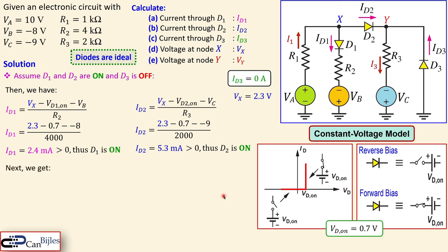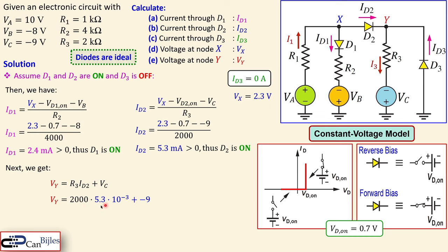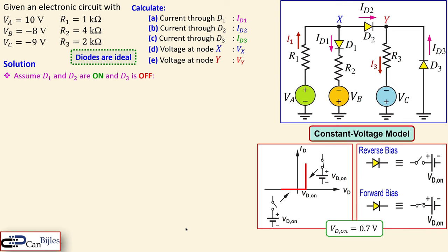The assumption that D1 and D2 are ON and D3 is OFF is now fully verified. We calculate VY: since I3 equals ID2, the voltage at node Y is VY equals R3 times ID2 plus VC, which is 2000 times 5.3 milliamps plus (minus 9), giving VY equals minus 1.6 volts.